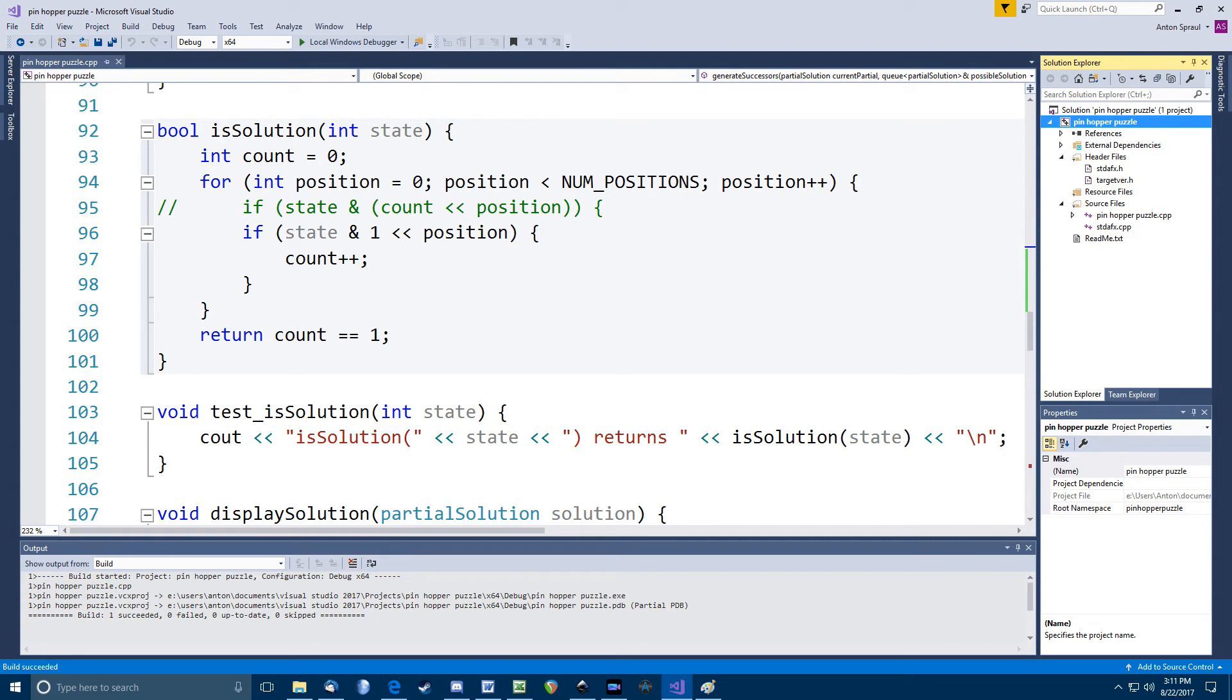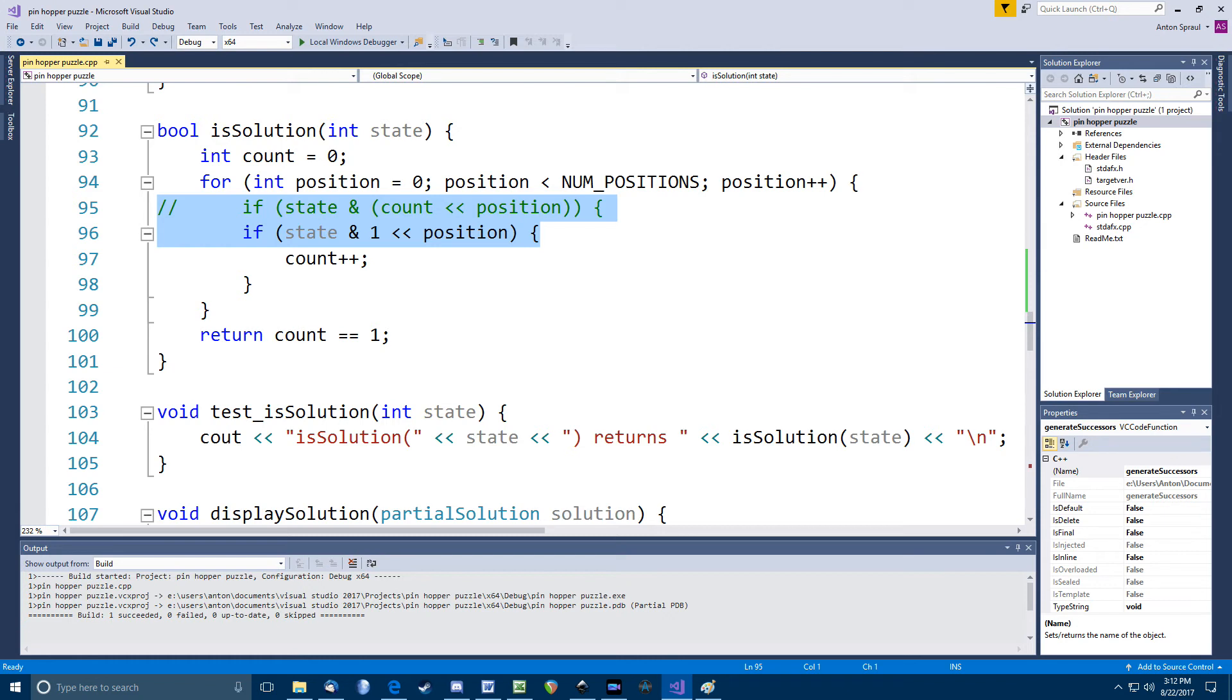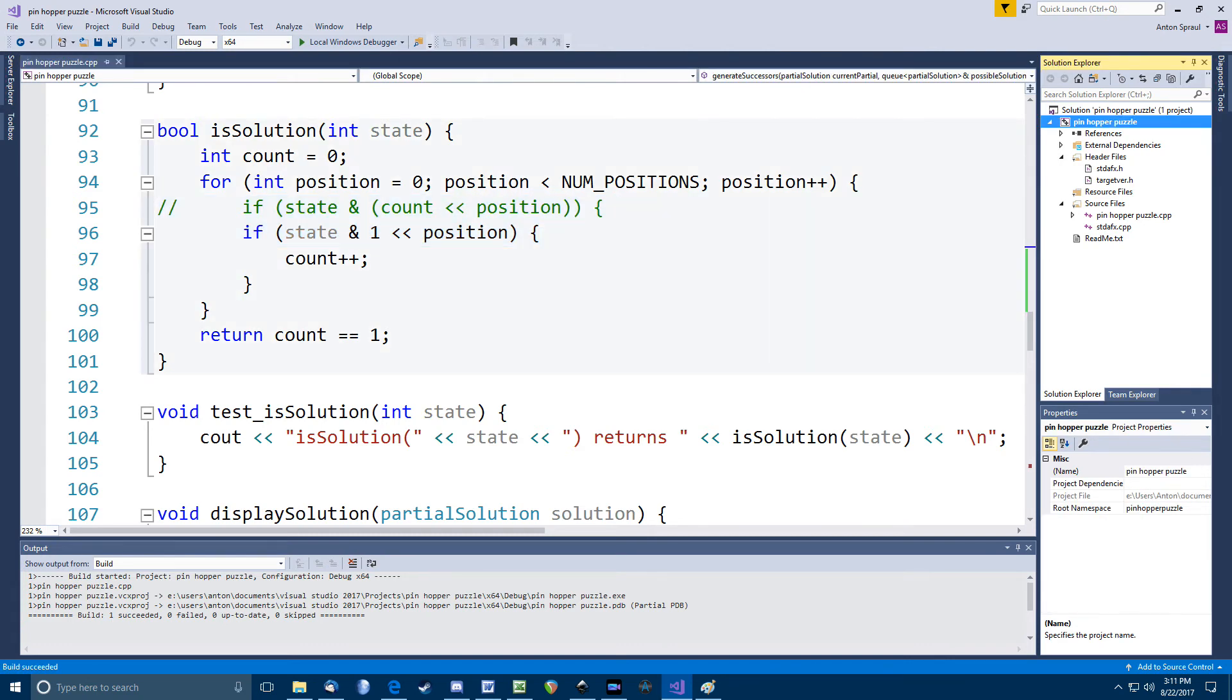This function determines if a state is a solution state. In other words, is there just one peg left? Here's where I made another mistake, which is why you see this test is solution function below it, because I was pretty sure I had a problem in the is solution function. You can see what I originally had for this line in the commented out line above it. I had count where I should have had one. I really don't know how that happened. What the code does is loop position from zero to 14 and then use that to shift a one bit left and test that bit in the state using bitwise and pretty much like we did in hasPeg. Only in this case, we're trying each position and counting up the one bits.